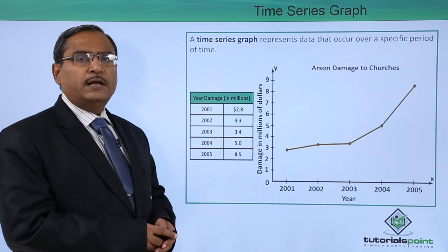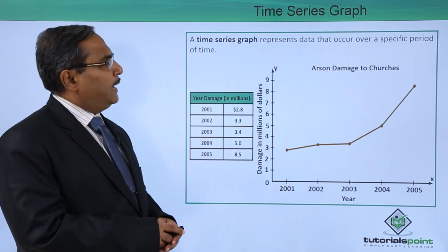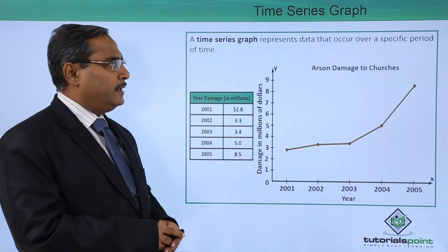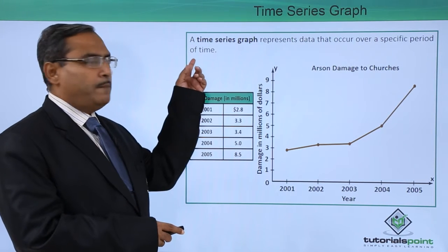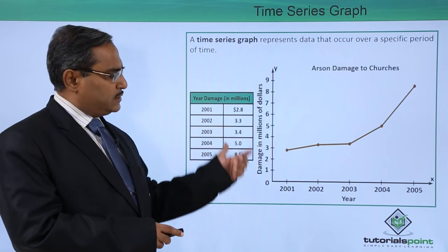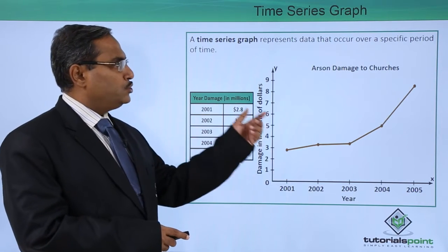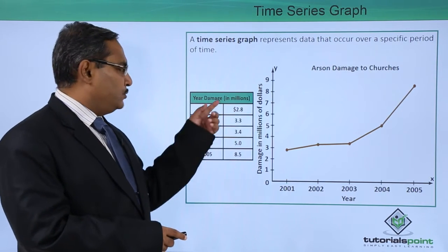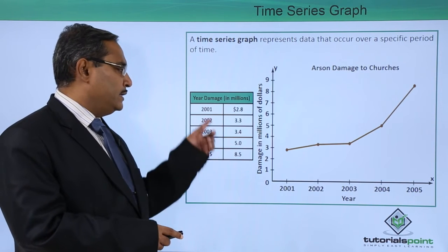Next we have the time series graph. The time series graph represents data that occur over a specified period of time. Here you can find year and damage in millions.